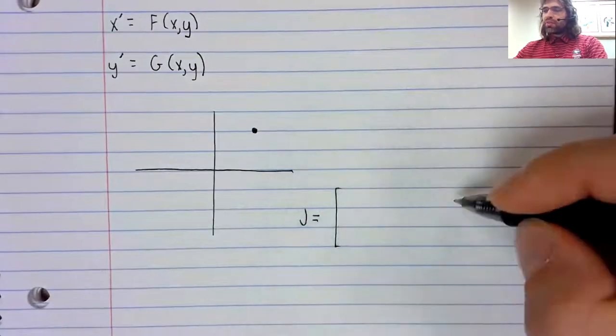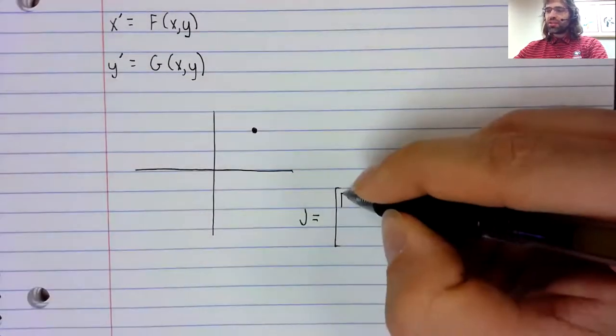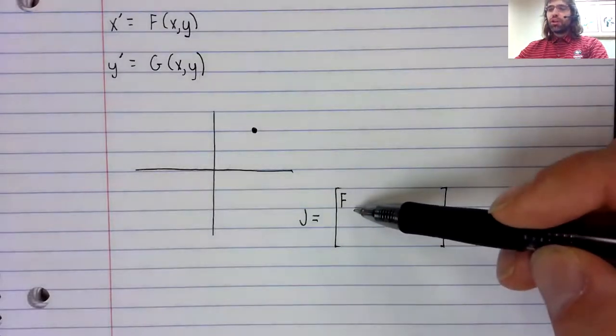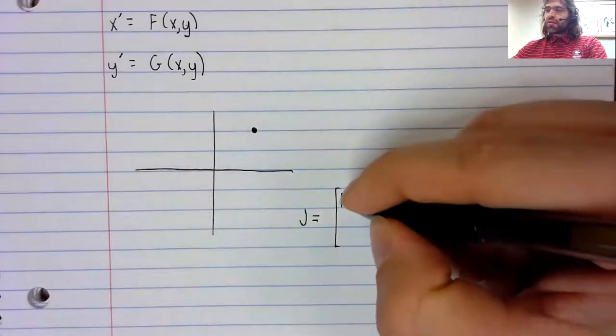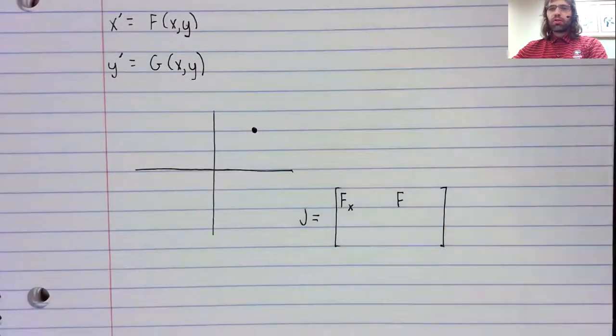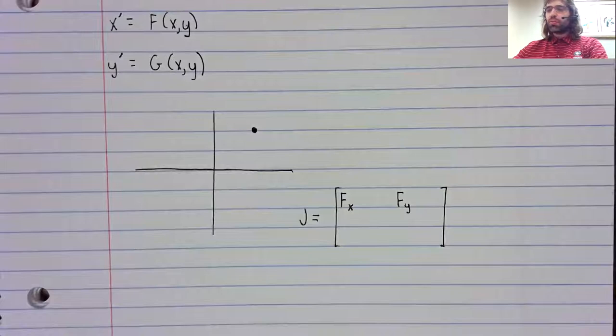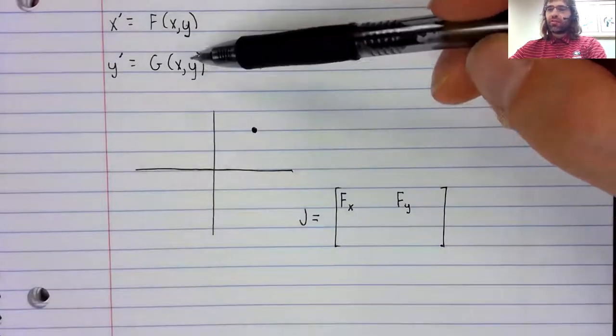You might have seen this before. It gets presented in calculus three traditionally. But the Jacobian is a matrix of partial derivatives. Its first row is going to be the partial derivatives of this function, the partial derivatives of f with respect to the first variable. And in the second row, we'll have the partial derivatives of the second function.